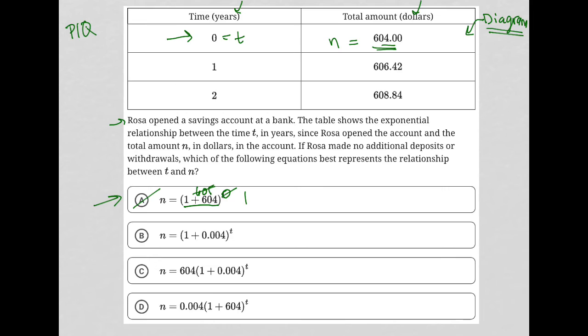How about choice B? It's simple to see as well that if I replace T with zero, this will not equal 604. So choice B is gone.